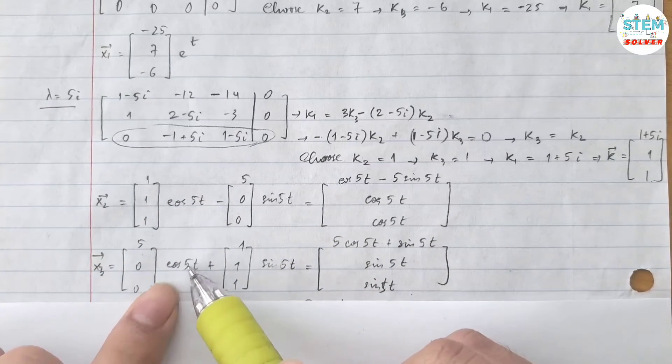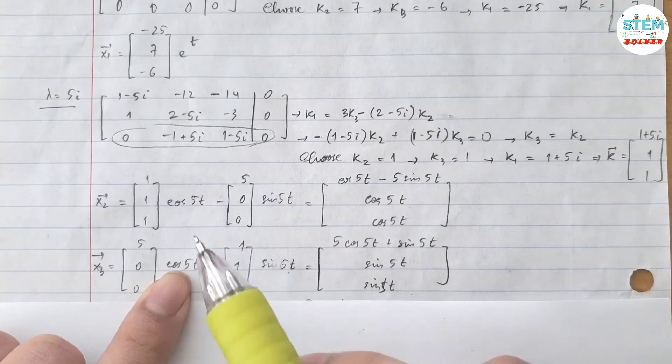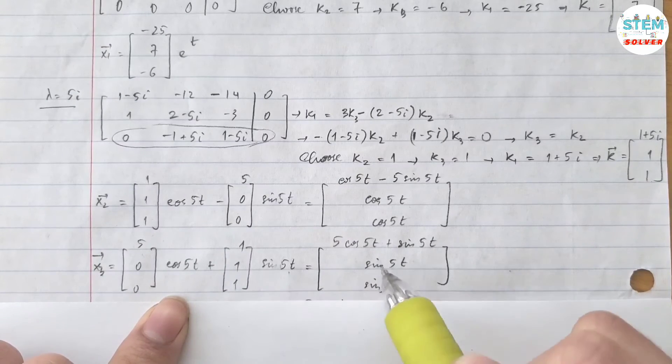That's why I have five, zero, zero for cos five t and one, one, one for sin five t. And then add these two vectors together. That gives you this vector.